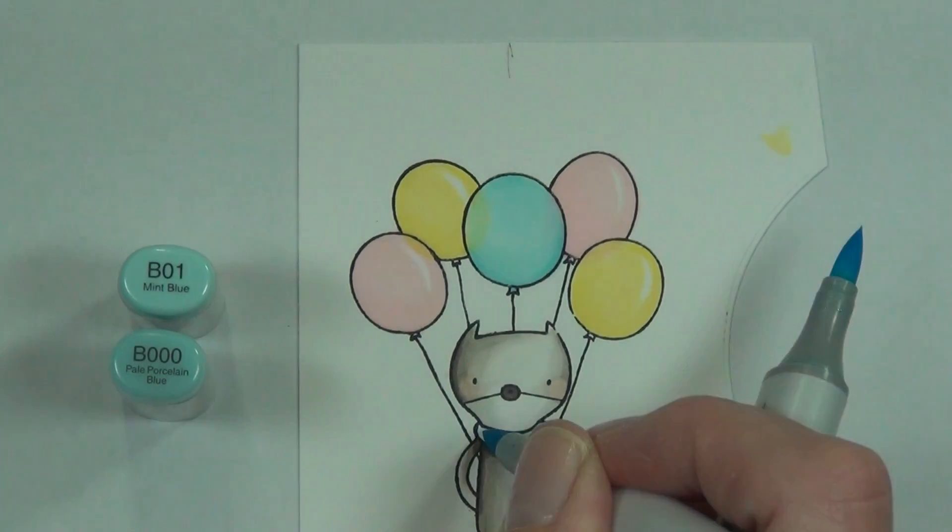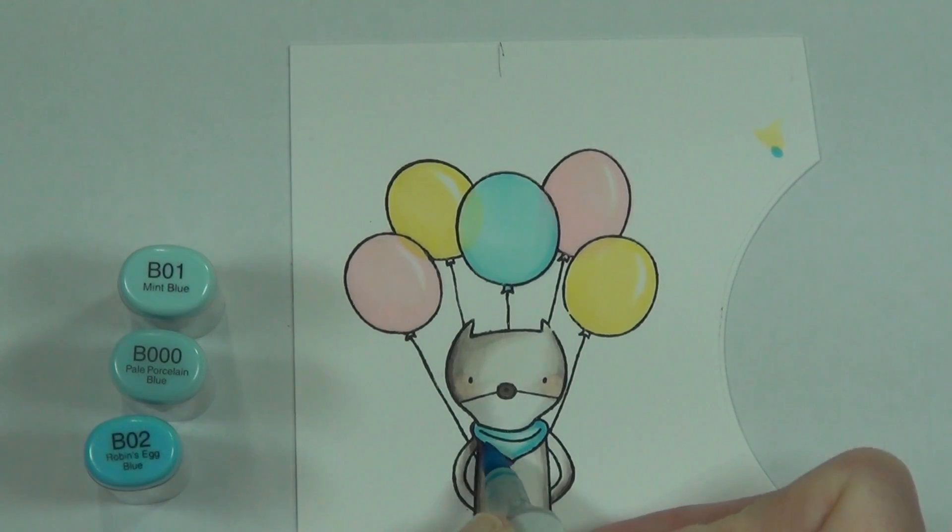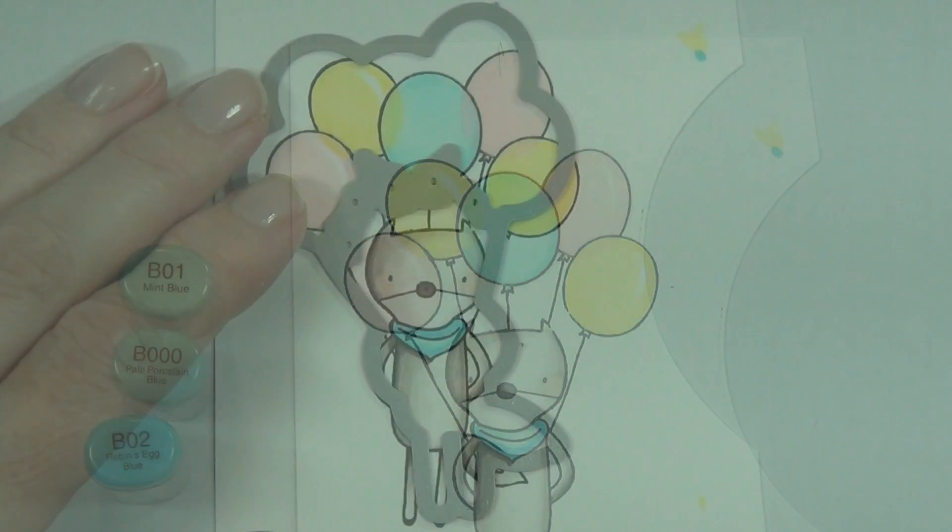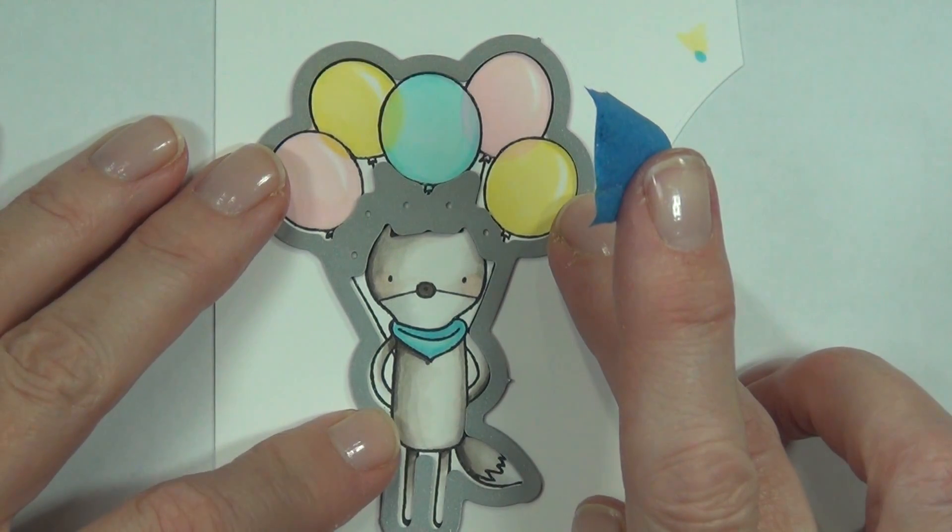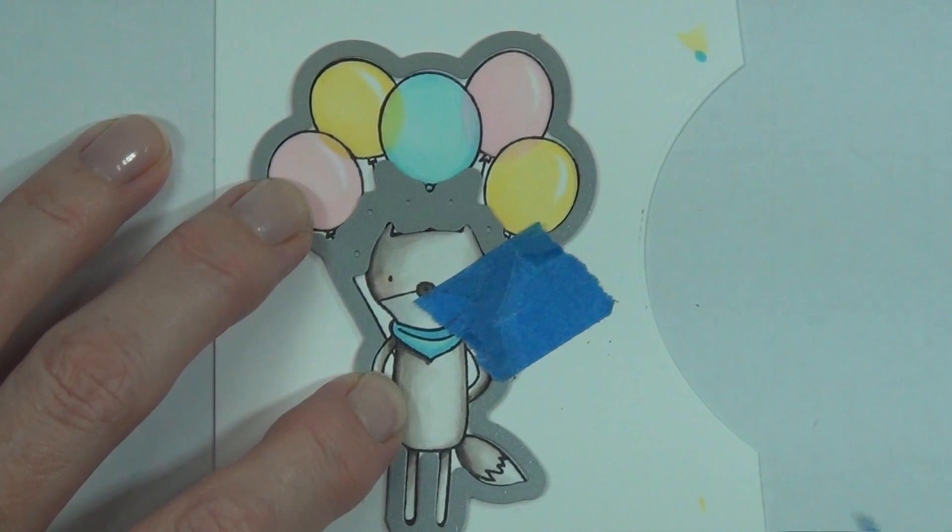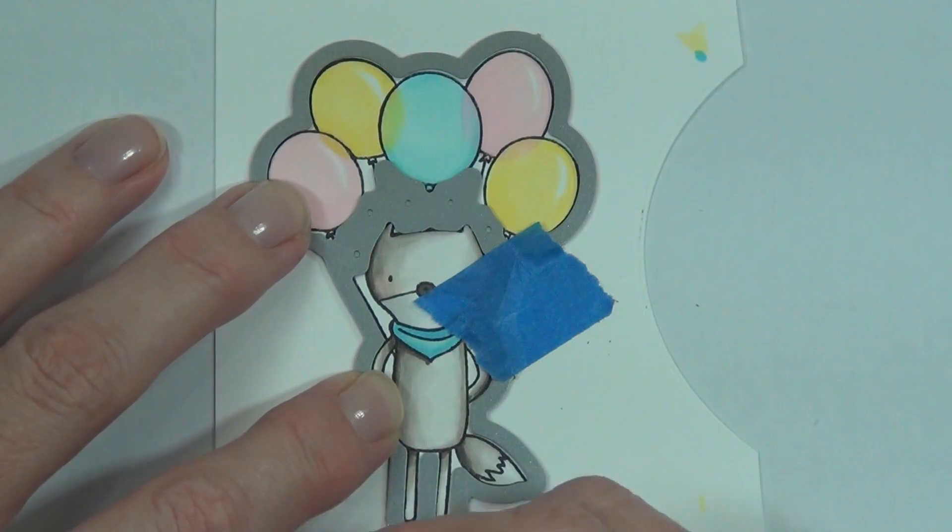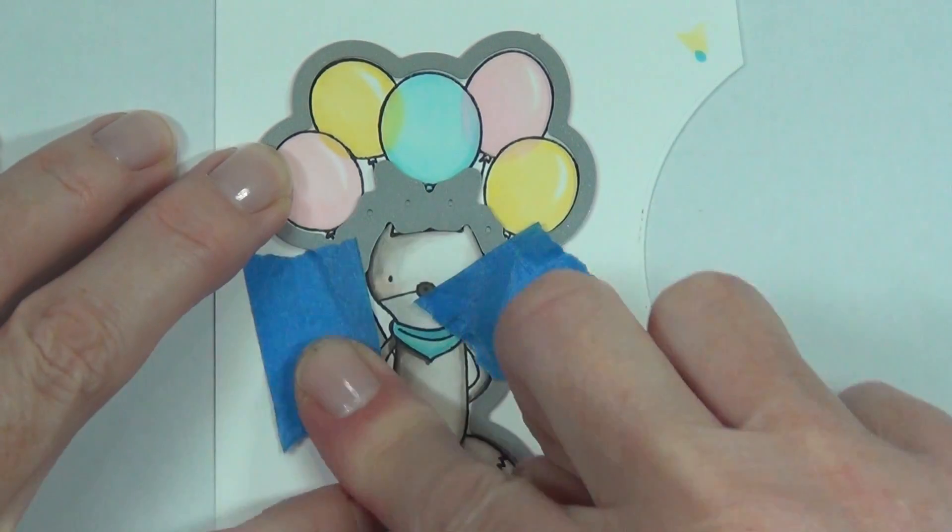This set has matching dies, so I'm just going to line this up and run it through my die cutting machine. I'll hold it in place with some low-tack tape. I really like this tape—it's 3M tape and I just get it from the painters section in the hardware store.